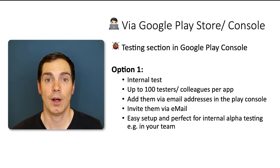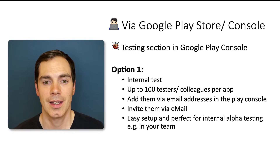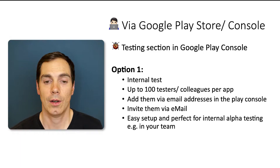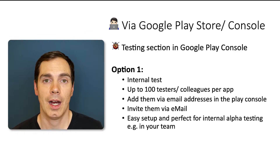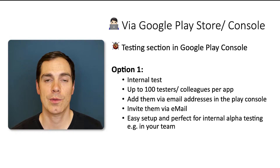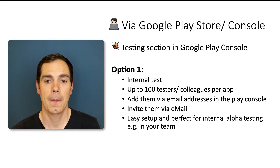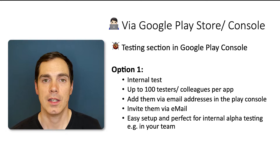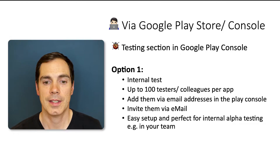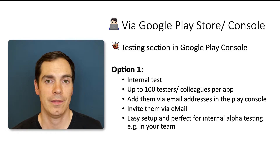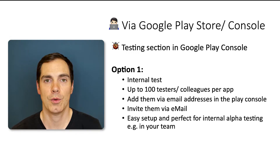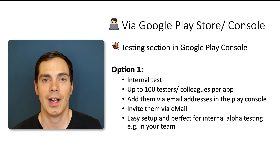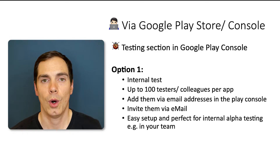With the Google Play Store, you have three options on how to set up a beta testing community. Option one is called internal test. As the name already suggests, an internal test is something you can use as an internal testing community. You can set up up to 100 testers or colleagues per app that you would like to distribute the app to. You can add them via email addresses in the Google Play console, then send them an invite link via email. The setup is pretty easy and straightforward. Option one is perfect for internal alpha testing — whenever you push code to the master branch and a new app gets built, you can directly push a new alpha version to these testers and get early feedback.